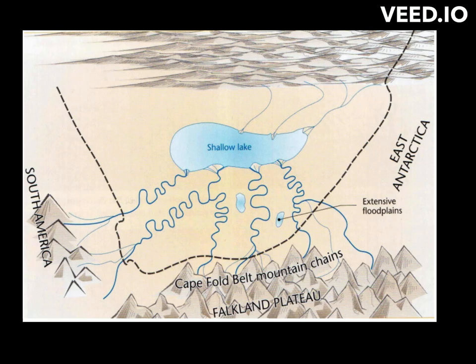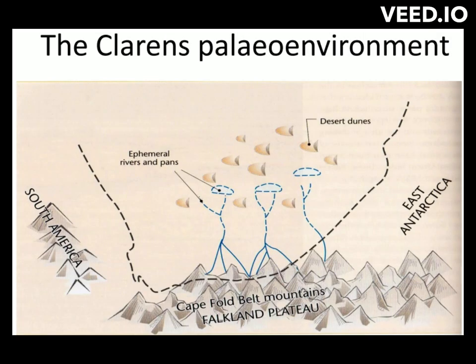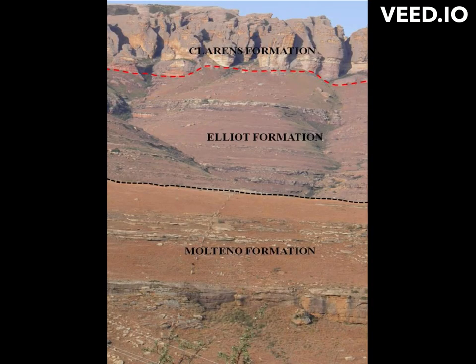Moving on, the Karoo was moving closer to the north pole, and the vegetation which was lost during the Permian mass extinction was recovered towards the end of Beaufort times. With the Karoo closer to the north, extremely hot conditions were reflected by increasing aridity from Elliott to Clarens during Stormberg times — Elliott, Molteno, Clarens.